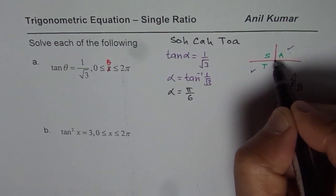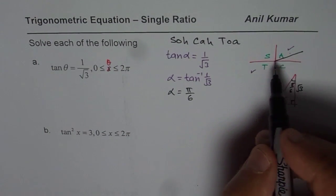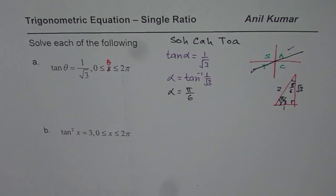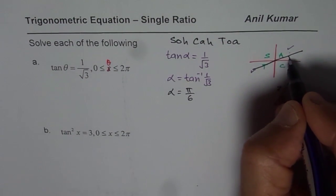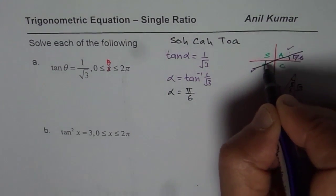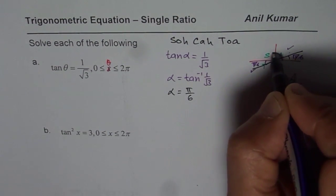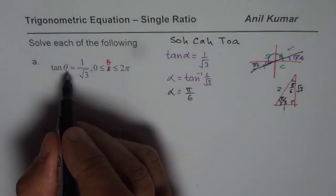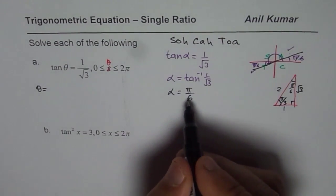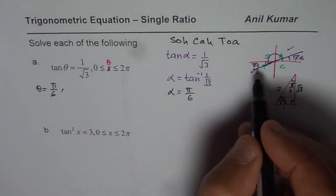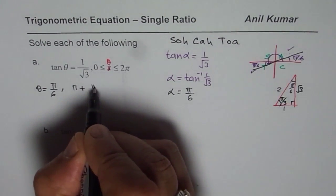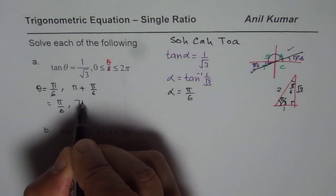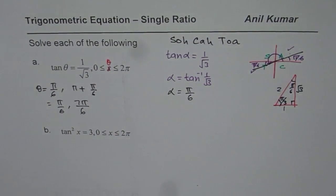But we are looking for two solutions. The other solution will lie in quadrant 3. The first one we just calculated is pi by 6. But how much is all this? You get theta equals pi by 6 in quadrant 1, and then in quadrant 3 it should be pi plus pi by 6, which is 7 pi by 6. That is how you can get your answer.